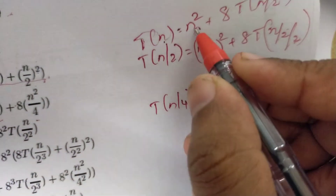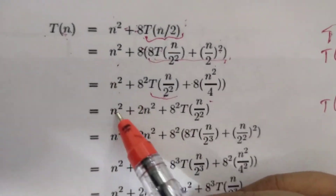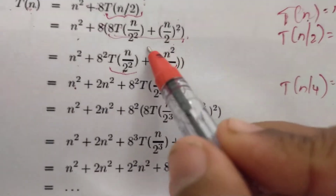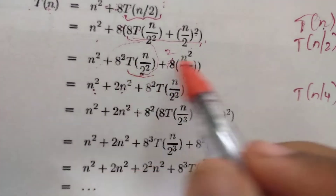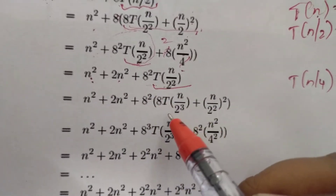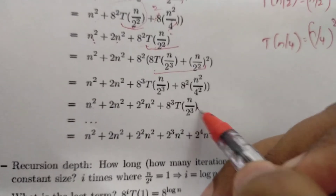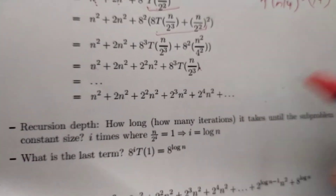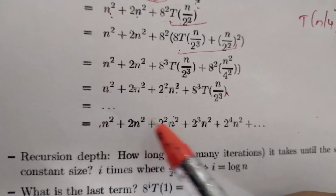Substituting T(n/4) back in: we get n² + a·(n/2²) + a²·(n/2²)² + a³·T(n/2³). We continue expanding this pattern. The terms form a series: n² + a·(n²/2²) + a²·(n²/2⁴) + a³·(n²/2⁶) + ... with increasing powers of a and 2.